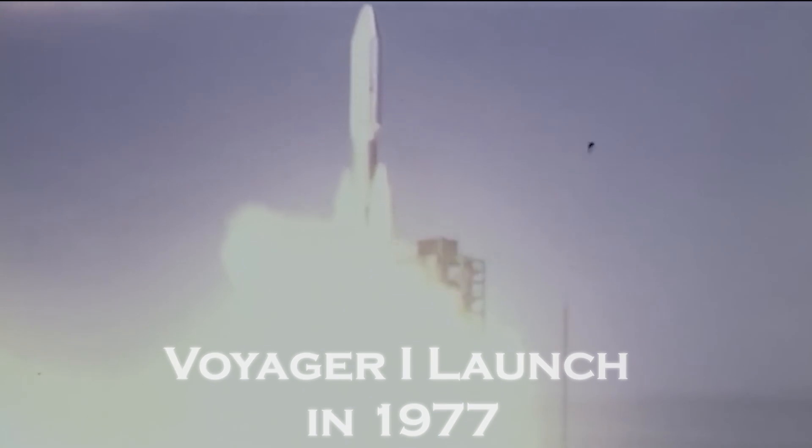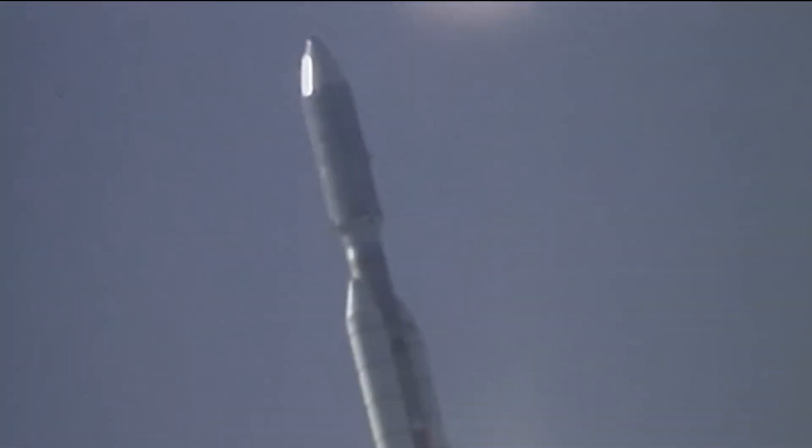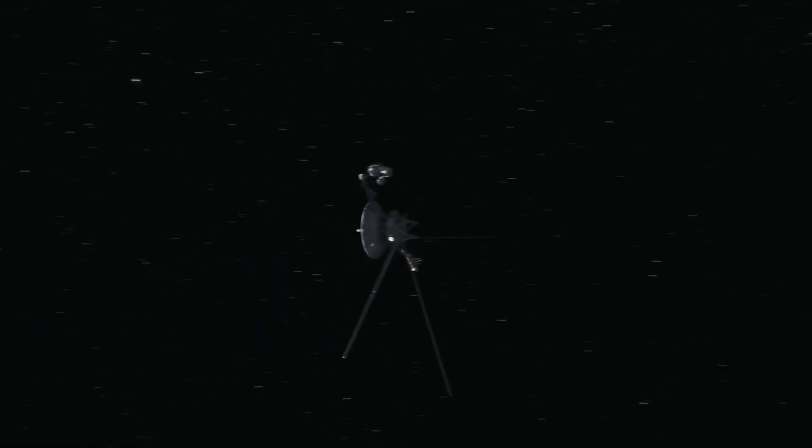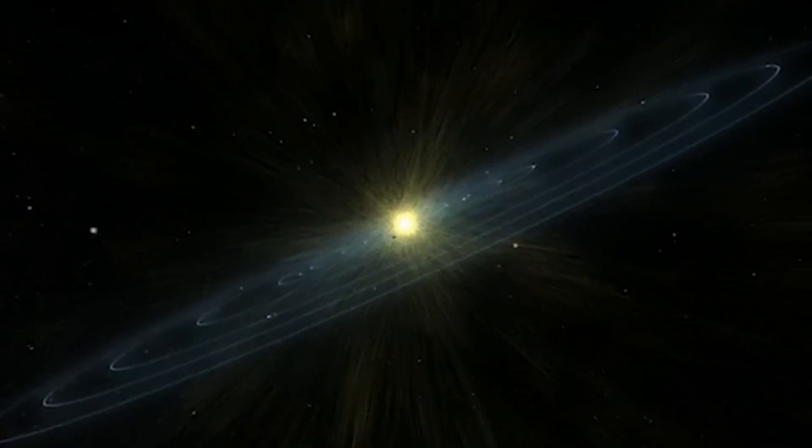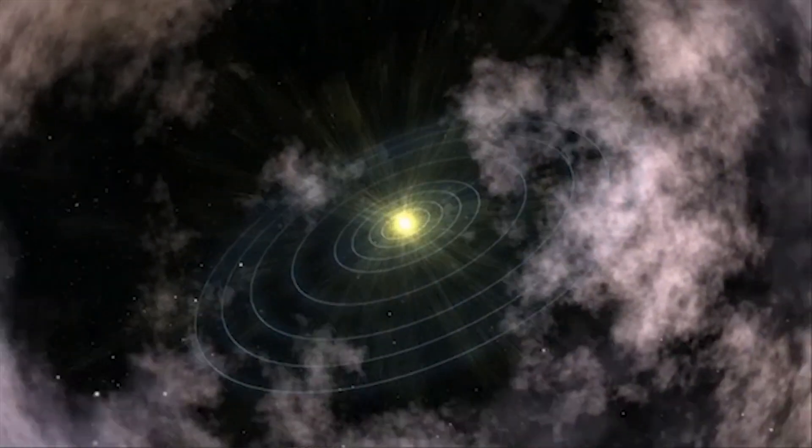Launched in 1977, Voyager 1 had a clear mission: to explore the outermost planets of our solar system, collect data, and one day perhaps cross that invisible boundary that separates our solar system from interstellar space.